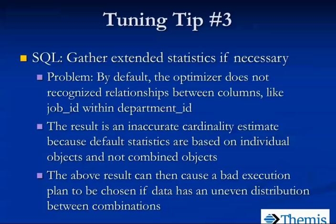Tip three: gather extended statistics if necessary. Many of you are aware that when you issue a query, the optimizer checks available statistics — like how many records are in a table, how many distinct values are in a particular column — and uses those to come up with a good execution plan. If those statistics are missing or inaccurate, that can be a problem. Extended statistics, also an 11g new feature, address the fact that statistics by default are generated on individual objects: individual tables, individual columns, individual indexes.